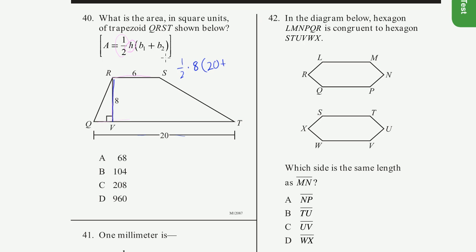plus base 2. Base 2 is this 6 right there. So I have 1 half times 8, which is 4, times 26. And 4 times 26 is equal to 104 square units. So that's that right there. So they're really just testing whether you can apply this formula, whether you can recognize what's the height and what are the two bases.